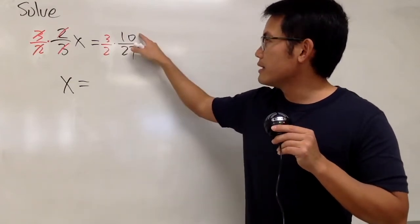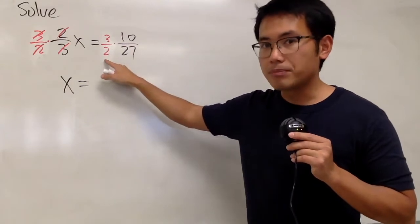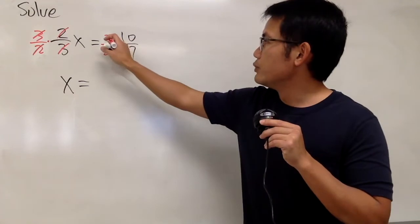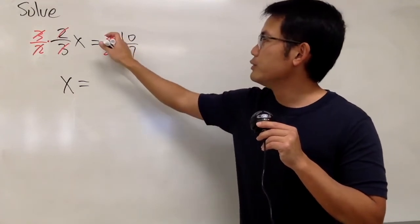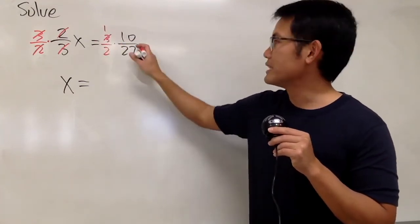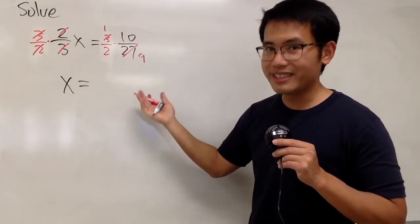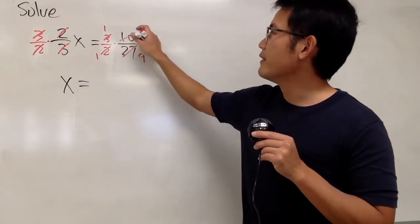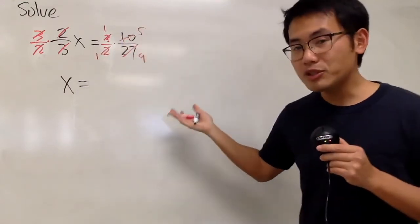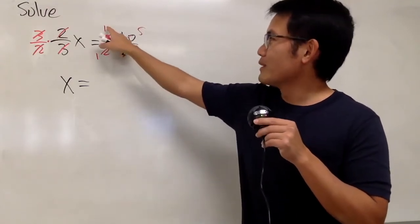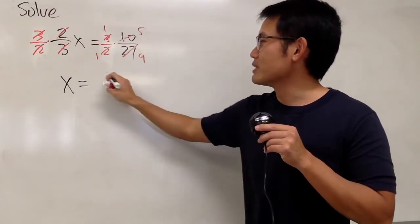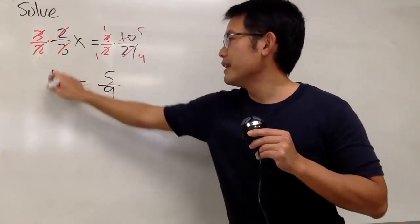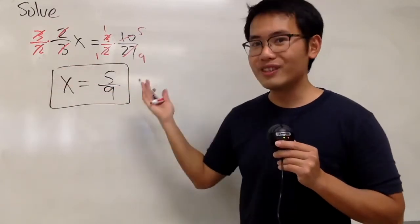Well, you can multiply top by top and then bottom by bottom. But you can cross-reduce. You see that 3 and 27 — 3 goes into 3 one time, and 3 goes into 27 nine times, so cross-reduce. Likewise, 2 goes into 2 one time, and 2 goes into 10 five times. It's much easier if you do it this way. Finally, we will just see 1 times 5, which is 5 on the top, and then 1 times 9, which is just 9 on the bottom. So finally, the answer is x equals 5 over 9.